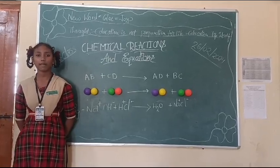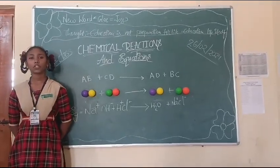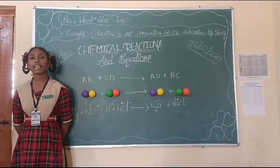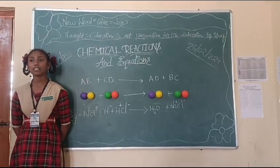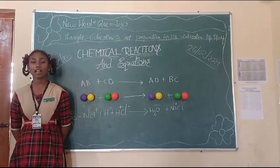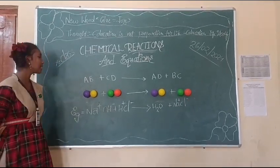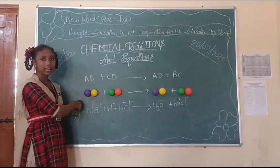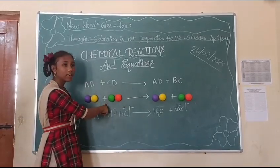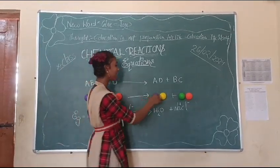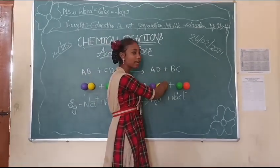The definition of double displacement: if two compounds react with each other and exchange their ions as cations or anions, it is called double displacement. For example, if we take compound AB and compound CD, it gives rise to AD plus BC. We exchange as anions or cations.